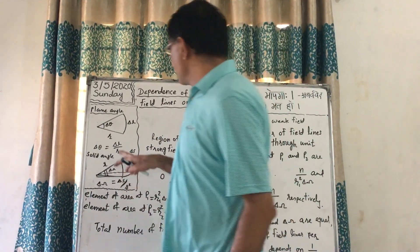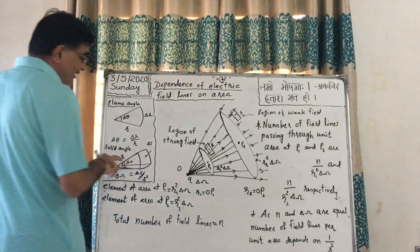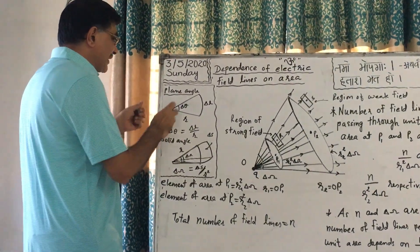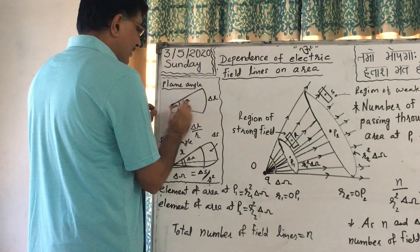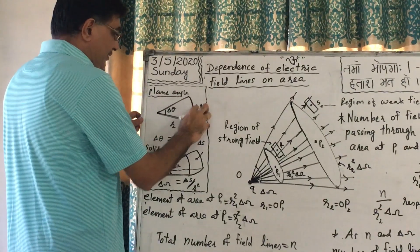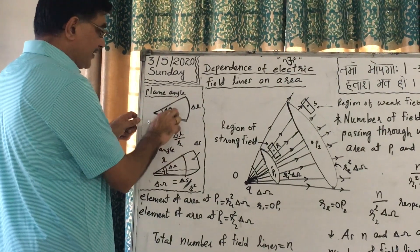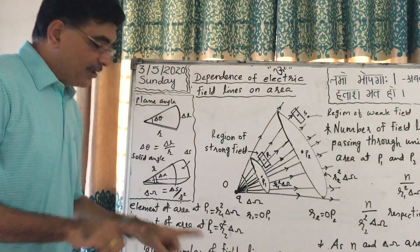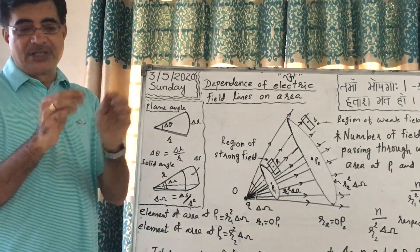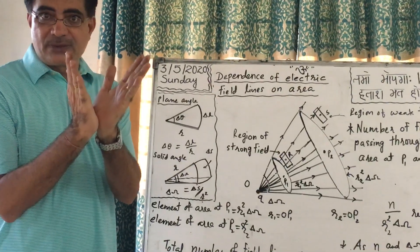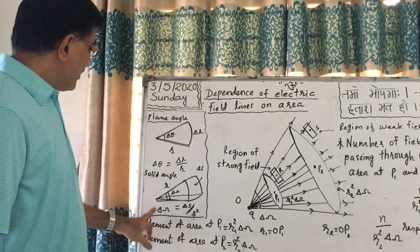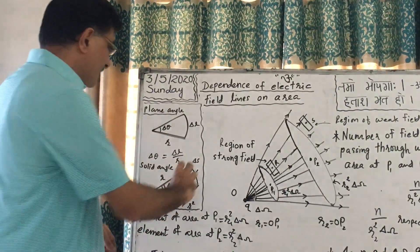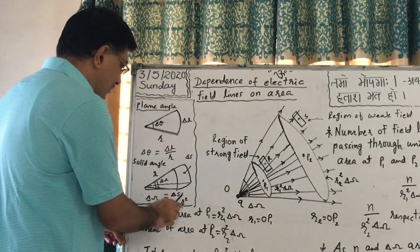These two are concepts from standard 11. Plane angle means angle between two lines — length of arc divided by radius gives the plane angle. Similarly, angle between two planes is called solid angle, that is delta omega, which equals the area subtending that angle divided by R squared.